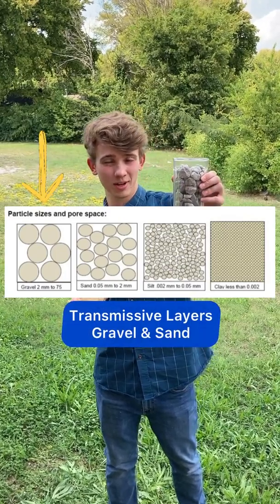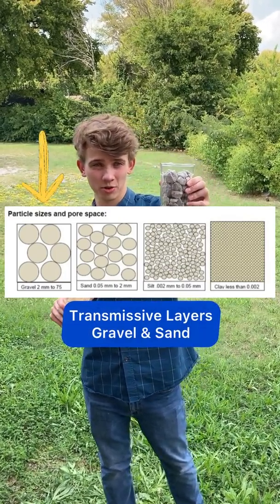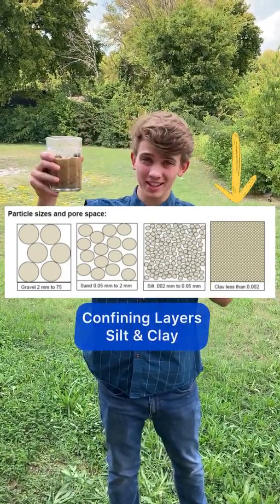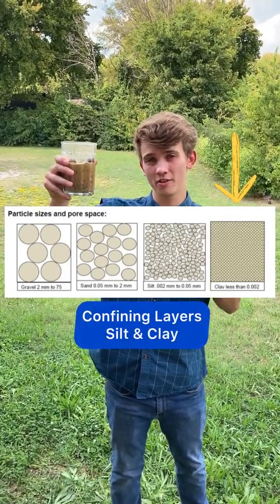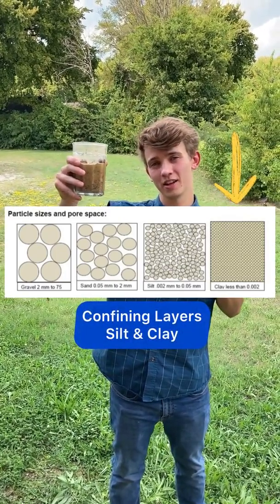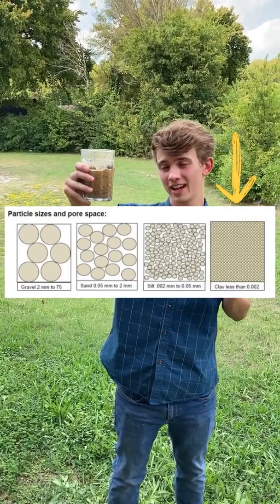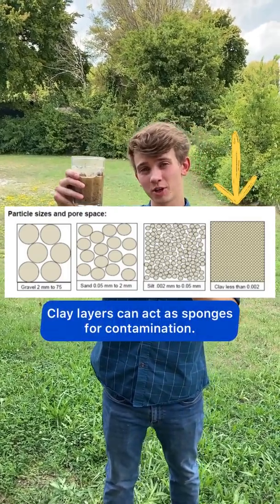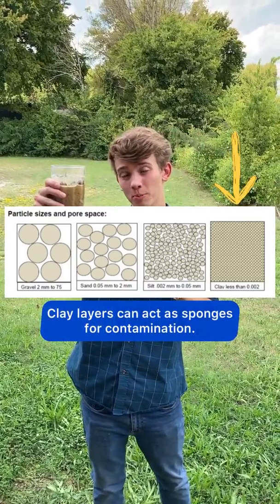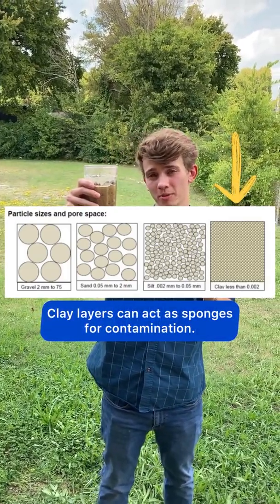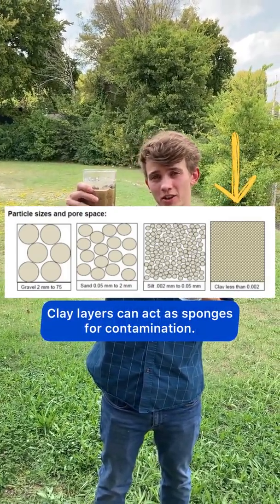Transmissive layers like these made of sands and gravels are great, but these layers can also have a huge impact on the aquifer. They can act as sponges for contaminants or protect the aquifer from contaminants depending on the environment and the spatial characteristics.